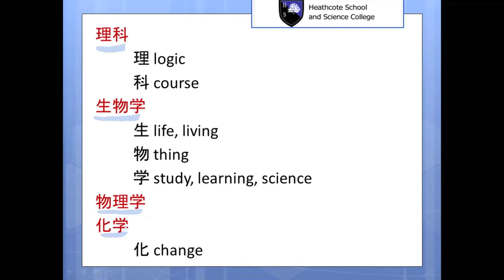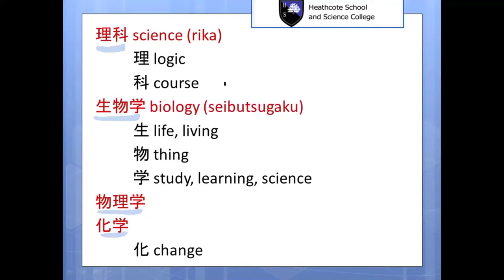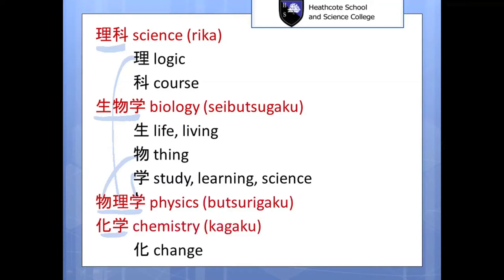The first one is 'course about logic' — those two words put together is science, pronounced 'rika' in Japanese. The second one is 'the study of living things' — that's biology. The next one: you've got 'thing', 'logic', and 'study' — so the study of the logic of things, that's physics. And the last one is 'the study of change' — and the study of change is chemistry. In chemistry, we'll be looking at how chemical reactions happen, and chemical reactions are change.